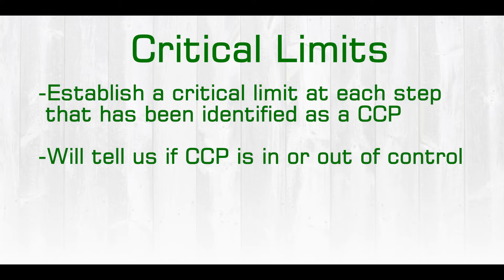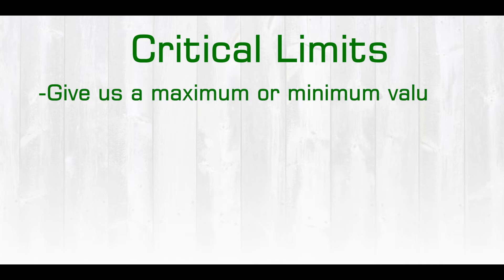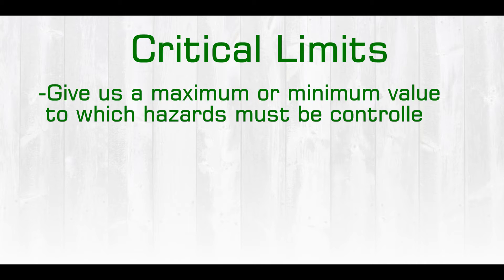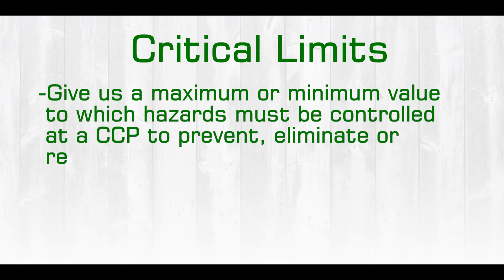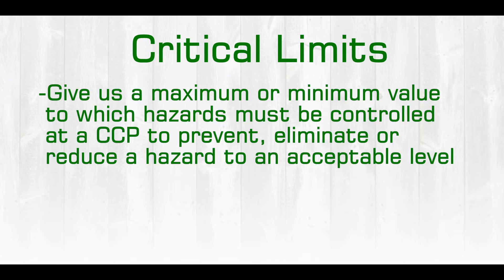This will tell us if the critical control point is either in or out of control. Critical limits give us the maximum and/or minimum value to which hazards must be controlled at a critical control point to prevent, eliminate, or reduce to an acceptable level the occurrence of the identified food safety hazard.